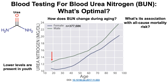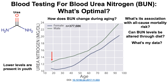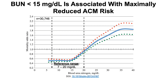What's the association for blood urea nitrogen with all-cause mortality risk? Blood urea nitrogen levels less than 15 mg per deciliter are associated with maximally reduced all-cause mortality risk, or ACM. We're looking at the risk for all-cause mortality on the y-axis plotted against BUN concentration in blood, in a study of around 31,000 subjects. The reference range for BUN is 7 to 20 mg per deciliter, highlighted by the dashed lines. Compared to a BUN of 15, even though 20 is at the high end of the reference range, someone with a BUN of 20 has about a 40% increased risk for all-cause mortality.